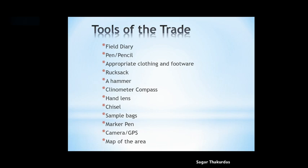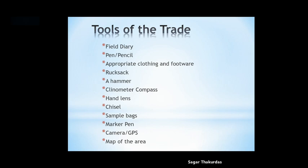Along with the hammer, it is better to have a chisel, which you can use to break down hard and compact formations. It is also important to have sample bags and to label your samples with the location and geological coordinates. To record those coordinates you need a GPS — most smartphones are GPS-enabled. GPS readings help you pinpoint your location on the map and allow you to revisit that location.